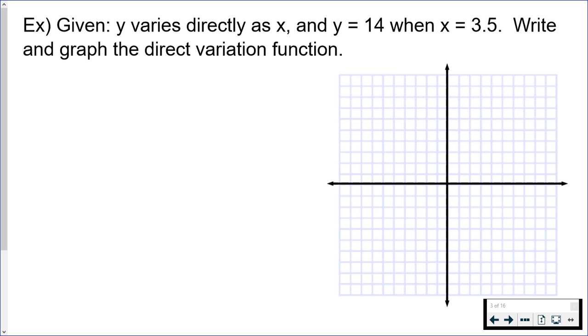So we are told that y varies directly as x. Anytime I see y varies, I write y equals. Directly as x means that x needs to be on the other side of the equal sign, but I also have to include a constant. Now in these problems, I'm going to use the letter k as the constant, but you can use whatever letter you want. So y equals k times x or whatever other letter times x.